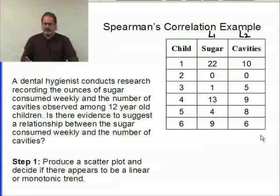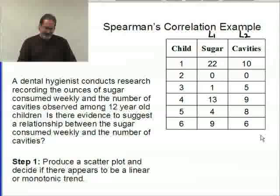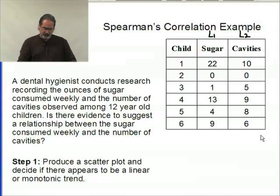Okay, I'm assuming that you went ahead and you do have the data in there. Now let's take a look at this data. A dental hygienist conducts research recording the ounces of sugar consumed weekly and the number of cavities observed among 12-year-old children. Is there evidence to suggest a relationship between sugar consumed weekly and the number of cavities? Now the first thing we want to do is produce a scatter plot and decide if there appears to be a linear or monotonic trend. Obviously if it looks to be linear then we go ahead and use Pearson's. If it's non-linear but monotonic, then we consider Spearman's.